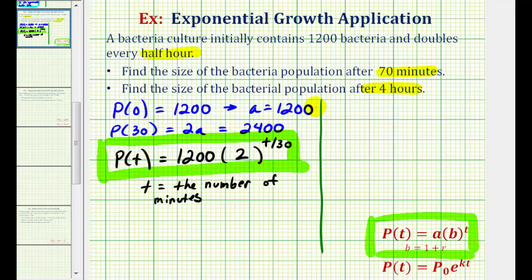So for the first question, we want to determine the value of P of 70, which is equal to 1,200 times two raised to the power of 70 divided by 30, or 7 thirds.